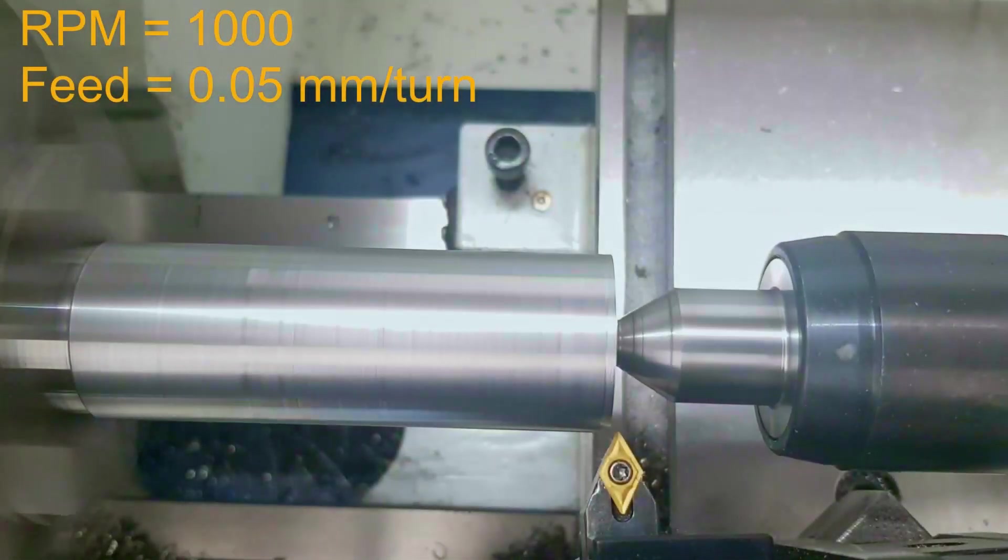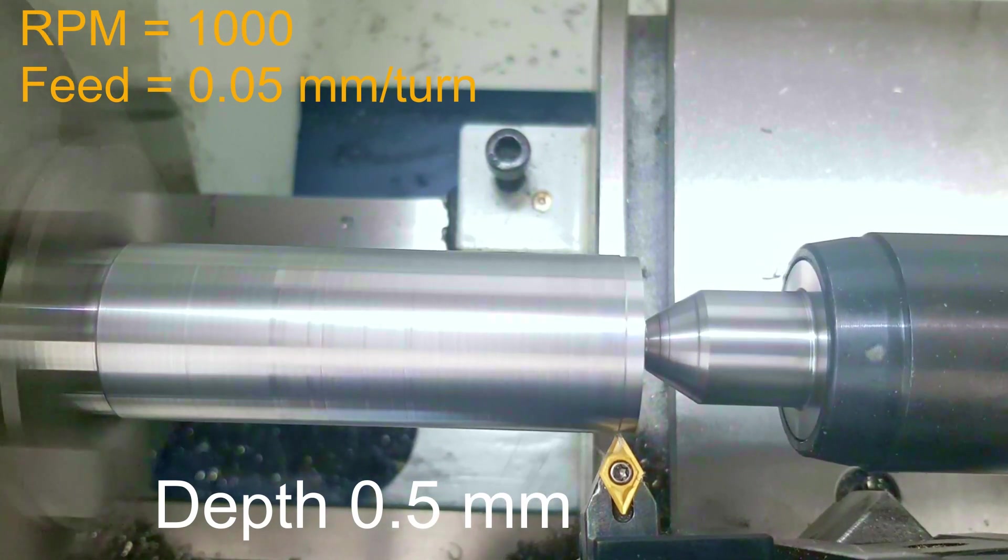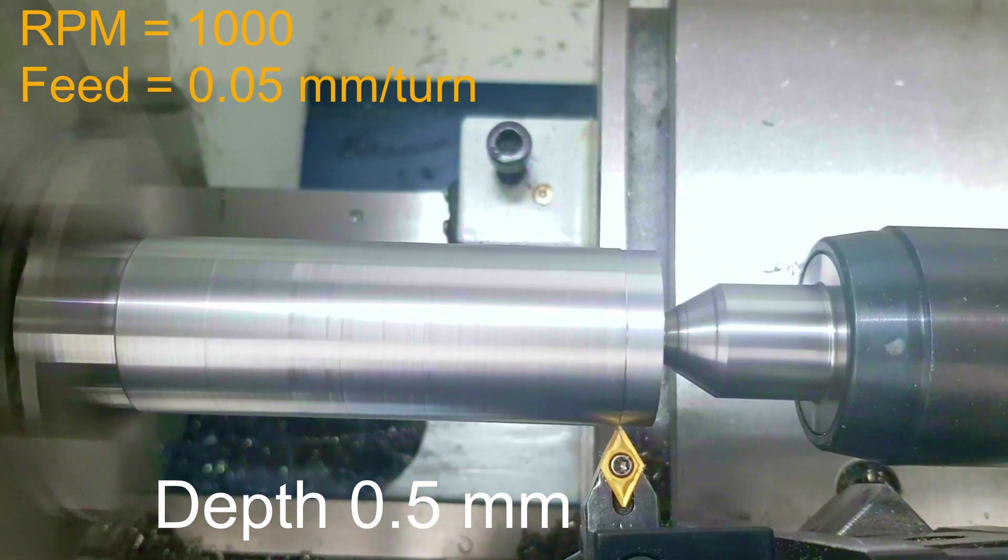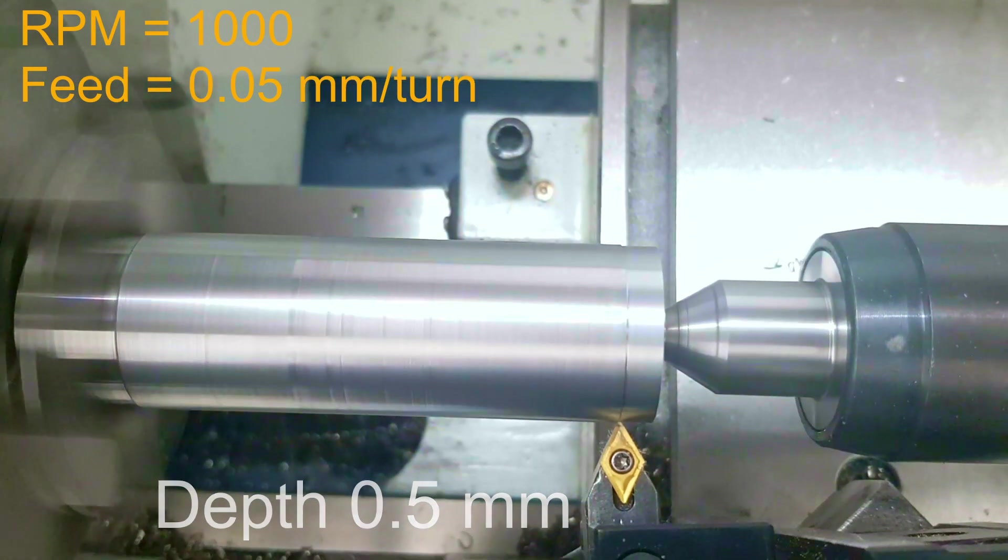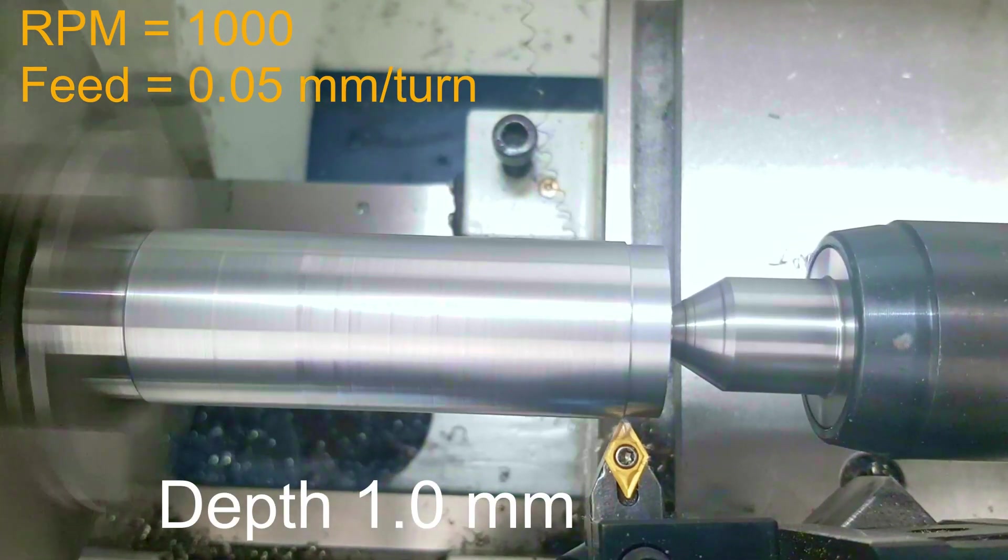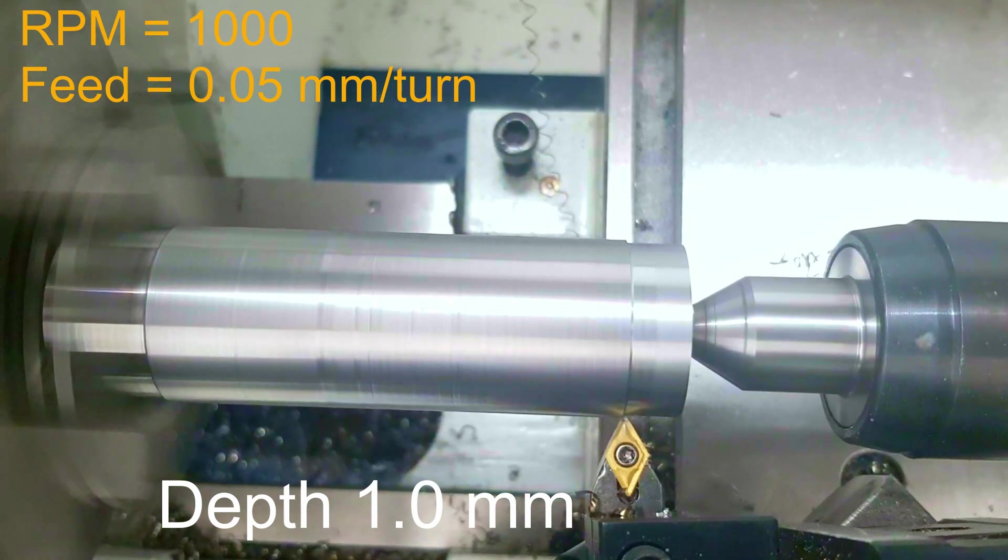In order to make the test in a quite scientific way, I decided to put the lathe to 1000 RPM and a feed of 0.05 mm per turn. Here you can see that I will cut every 0.5 mm.